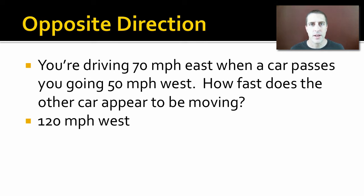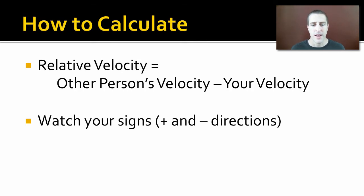We could make an equation out of this, make it a little simpler. So here's our equation, the relative velocity of two objects. You take the other person's velocity minus your velocity, and you'll get the relative velocity.